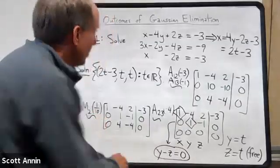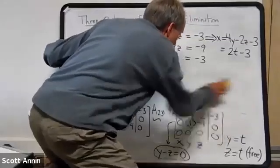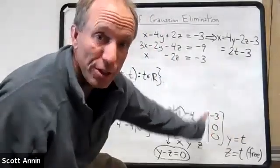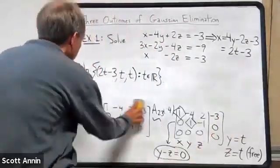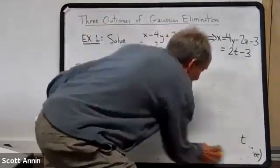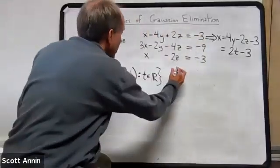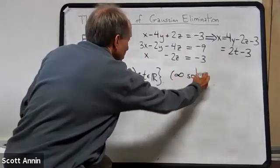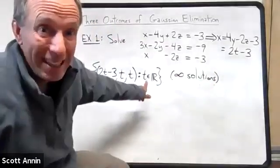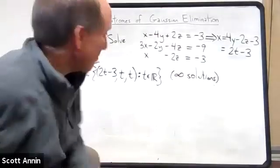So for this example, notice that we have a free variable. That's because we have an unpivoted column here. This third column does not have a pivot. So that's a good observation. In fact, if we think about it, the number of solutions in this case is we have infinitely many solutions for this example. And that's because of the free variable, right? I can choose T to be any number that I want and it'll be a valid solution.